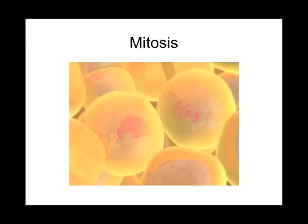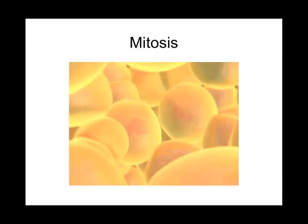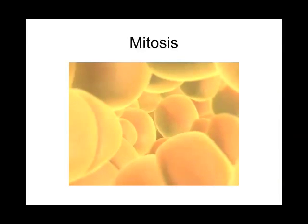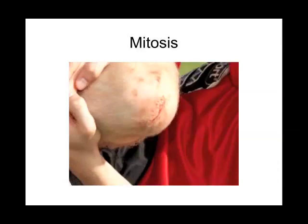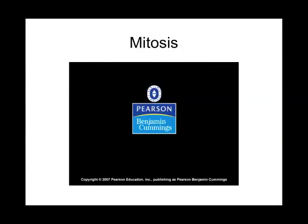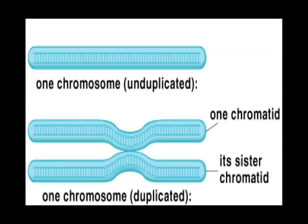The cytoplasm divides by the process of cytokinesis, forming two separate daughter cells. In your body, millions of cells divide every second, providing new cells for growth and repair. In this slide, I have put the picture of the sister chromatids. At the top is a chromosome that's not duplicated — that's how they exist until they go through synthesis phase. Once they duplicate, you have two identical chromatids. That is a duplicated chromosome — each chromatid is identical to the other, and they're called sister chromatids.